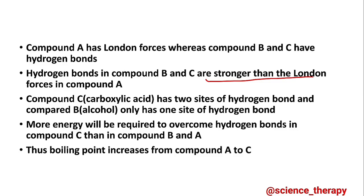Let's recap: compound A has London forces because it belongs to the alkane homologous series, whereas compound B and C have hydrogen bonds. Hydrogen bonds in compound B and C are stronger than the London forces in compound A. Compound C is a carboxylic acid which has two sides of hydrogen bond, and compound B is an alcohol with only one side of hydrogen bond. Therefore, more energy will be required to overcome hydrogen bonds in compound C than in compound B and A. Thus, the boiling point increases from compound A all the way to compound C.